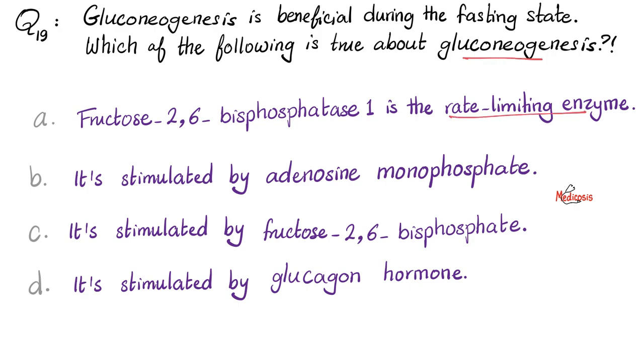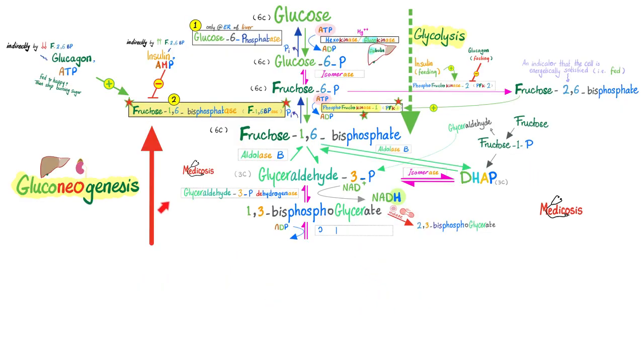What's the rate-limiting enzyme in gluconeogenesis? Is it fructose 2,6-bisphosphatase? No, it's fructose 1,6-bisphosphatase. Is gluconeogenesis stimulated by adenosine monophosphate? No, actually, AMP, adenosine monophosphate, inhibits gluconeogenesis. How about fructose 2,6-bisphosphate? It also inhibits gluconeogenesis. How about glucagon? Let's think about that. Gluconeogenesis happens in the fasting state, not in the land of abundance, insulin land, but in the land of scarcity, glucagon land. So it makes sense that glucagon acts in its own self-interest and promotes gluconeogenesis during fasting and starvation.